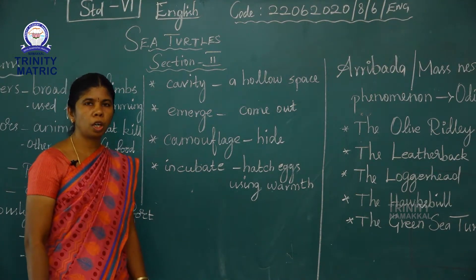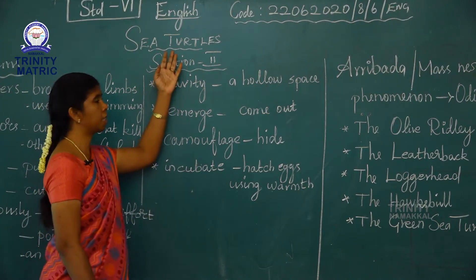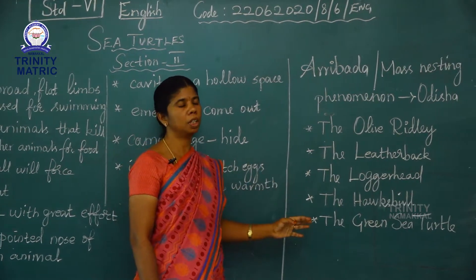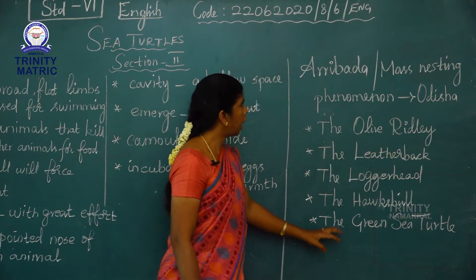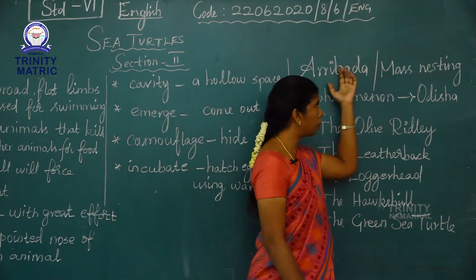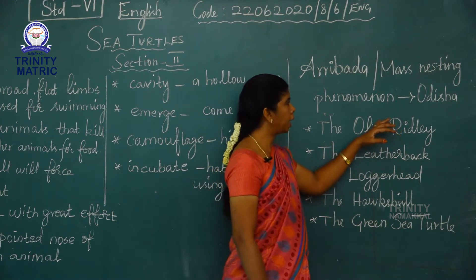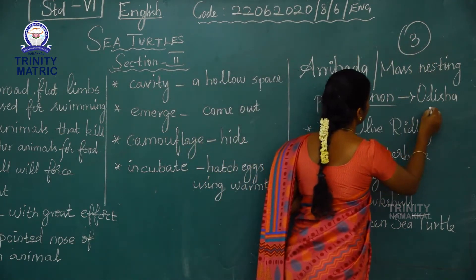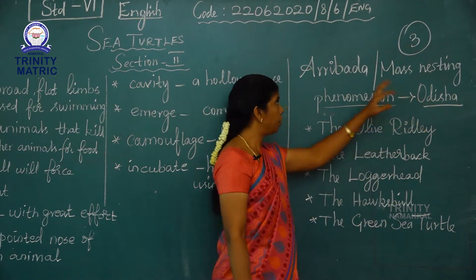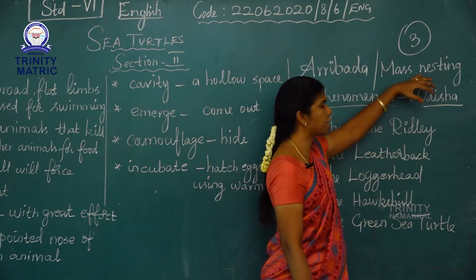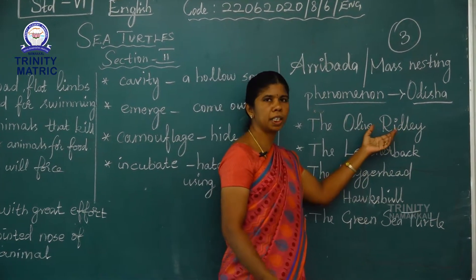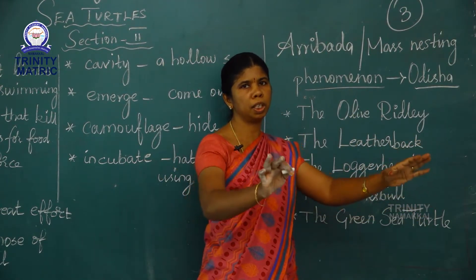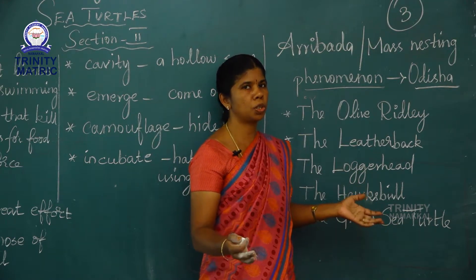Hi children, I hope you all are fine. In the previous class we studied about sea turtles. All over the world we have seven species of sea turtles. We studied about five kinds and what is aribada — aribada or mass nesting means a group of olive ridley sea turtles that comes on the seashore to lay eggs in a particular season, coming in large numbers to lay eggs on the sea beach.